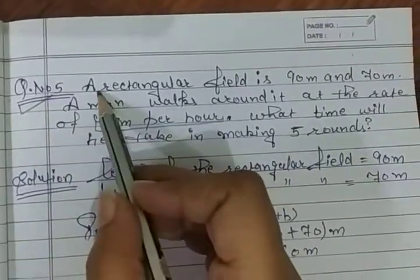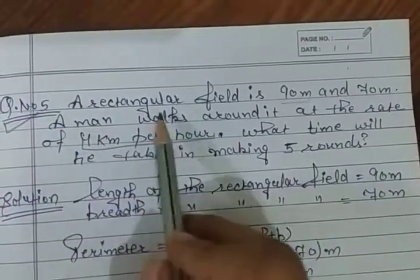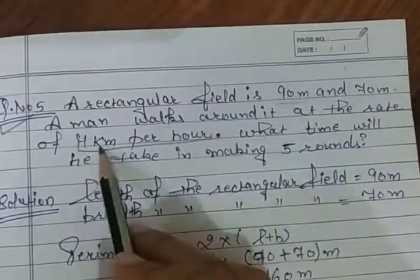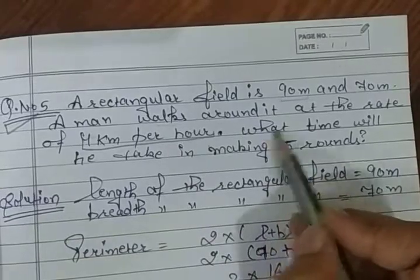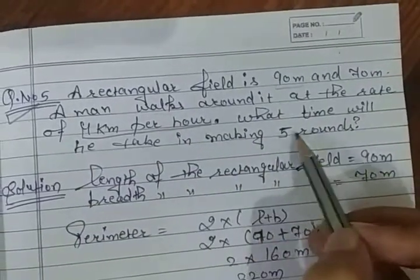This is your fifth question. A rectangular field is 90 meters and 70 meters. A man walks around it at the rate of 4 km per hour. How much time will he take in making 5 rounds?